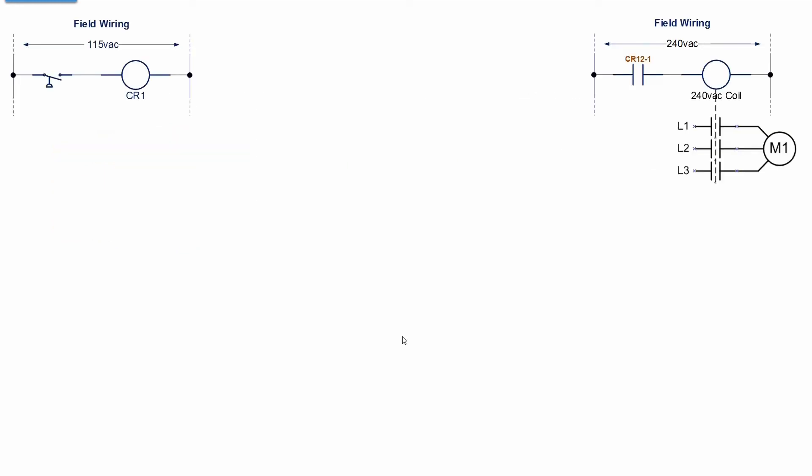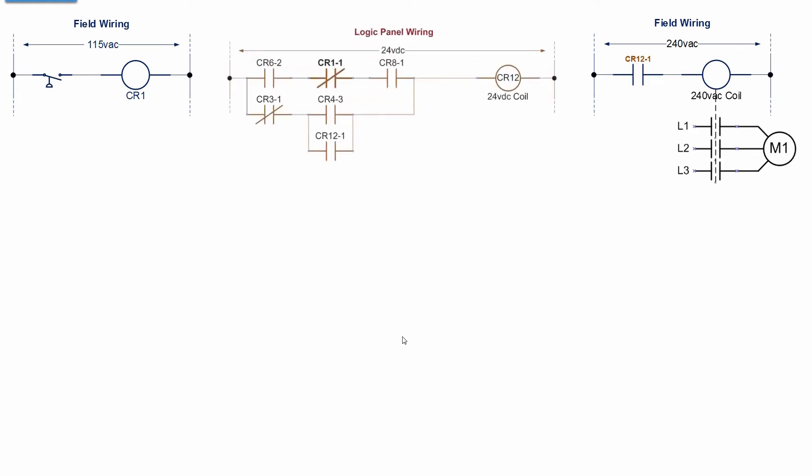Let's take another example. Here's our field wiring — we have a pressure switch that operates on 115 volts AC in the field. It energizes contact relay CR1. On the output side of the field wiring we have 240 volts AC. There's a relay CR12 that will control a contact, and when that contact closes it will energize a coil and close three contacts that supply three-phase power to the motor. Here's the logic for relay CR12. We don't see the coils here — we're just grabbing one chunk of relay logic: one field device, which is CR1, the pressure switch on the hydraulic reservoir. That pressure switch closes when the hydraulic pressure is up to the set point, and when we close contact CR12 that runs the motor to pump the pressure up. That is a rung of ladder logic.